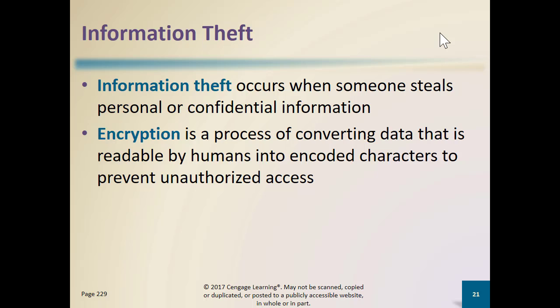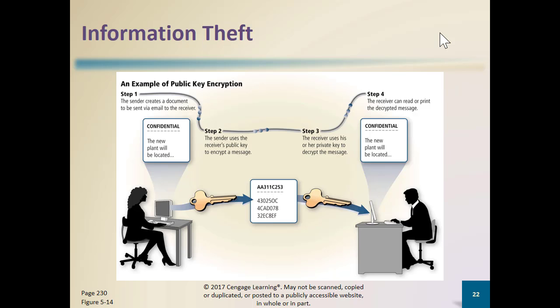How do we protect that information? We expect that people holding our information in the cloud, if it's personal information that could be used for identity theft, are encrypting it — encrypting our credit card numbers, our names, all that. Encryption is a process of converting data readable by humans into encoded characters to prevent unauthorized access. To decrypt it, we need a key, and a lot of times there are two keys — one held where the data is encrypted and one that we might have — so no one else can read it without both keys.